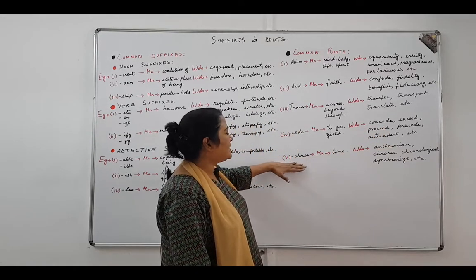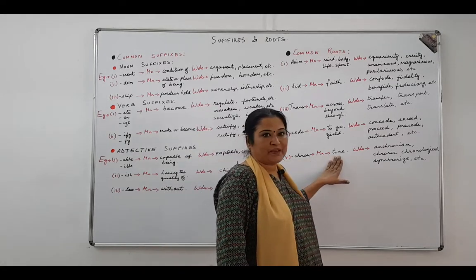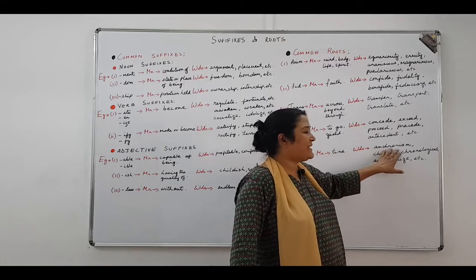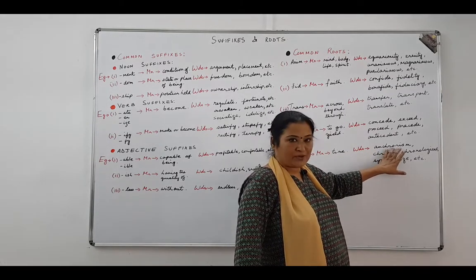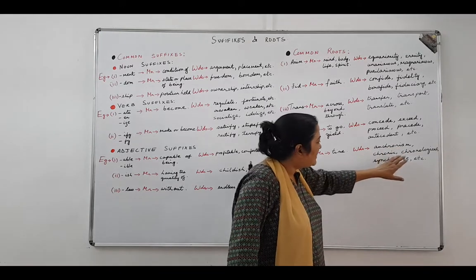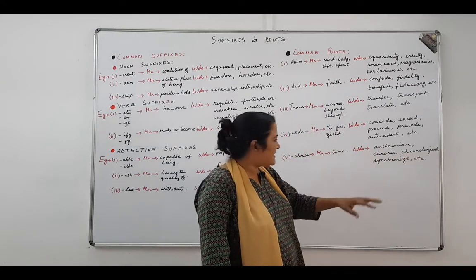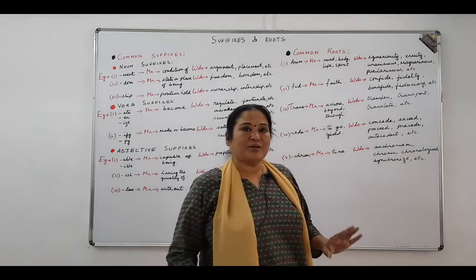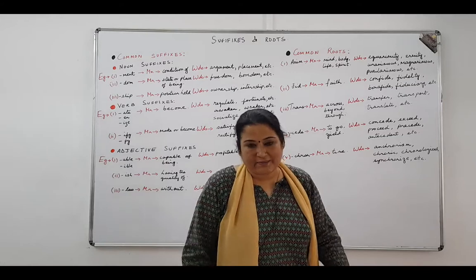The last root word that we have picked up for this session is c-h-r-o-n, which means time. Chron gives you words like anachronism, that means out of place, in the wrong time. Chronic, continuing for a very long time. Chronological, chronological sequence of events that happens with time. And synchronize is when you set two clocks at the same time together. So two events happening at the same time.